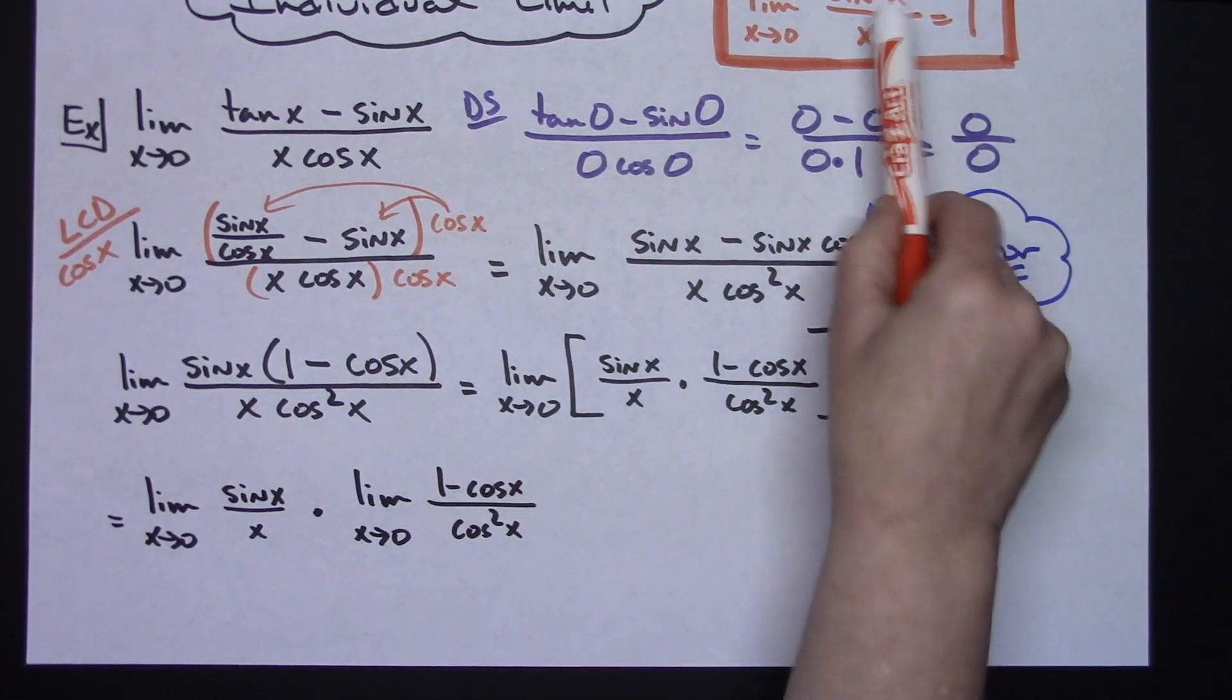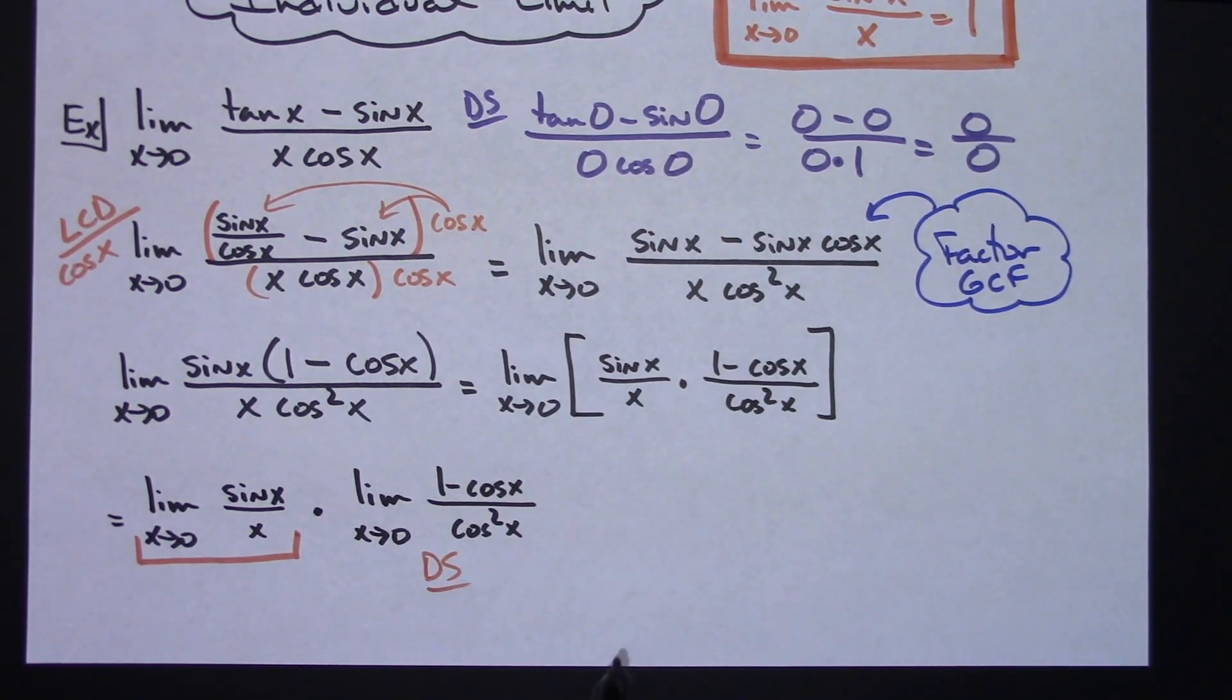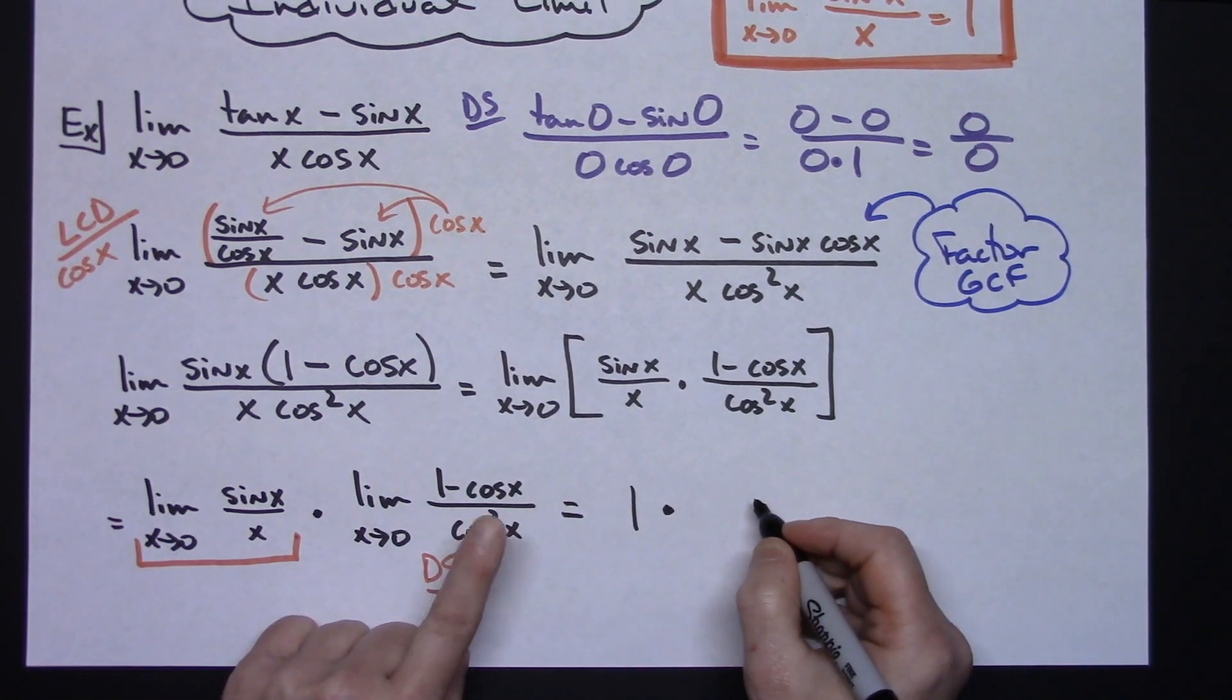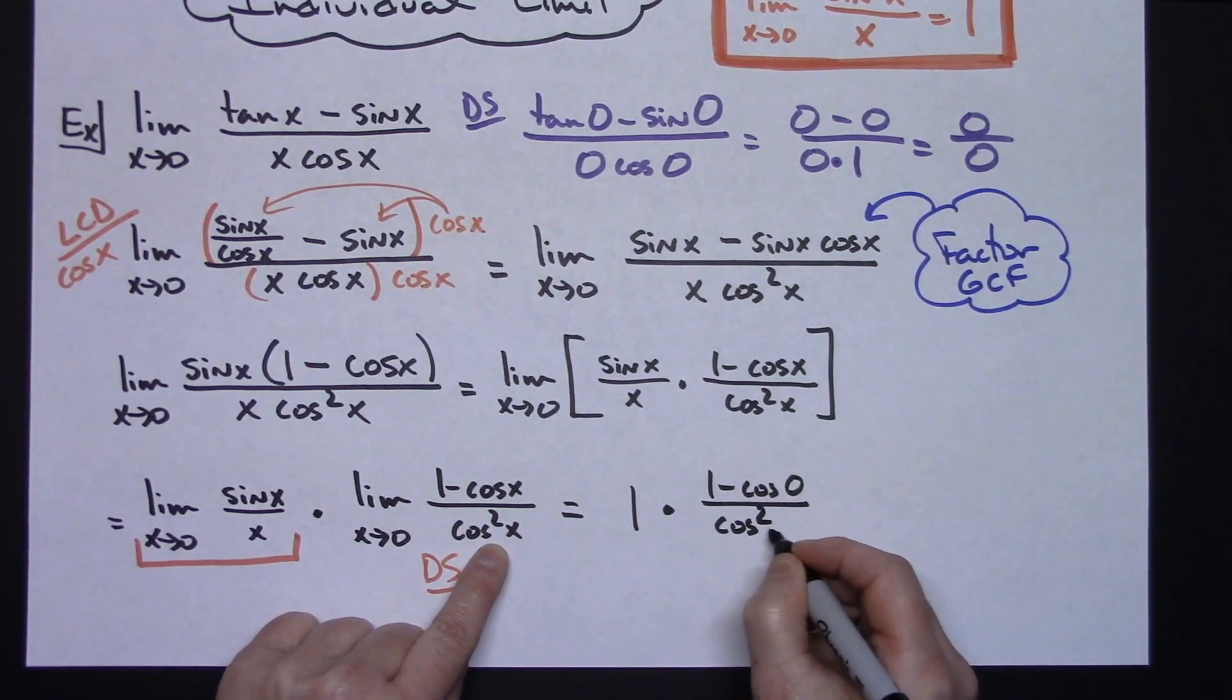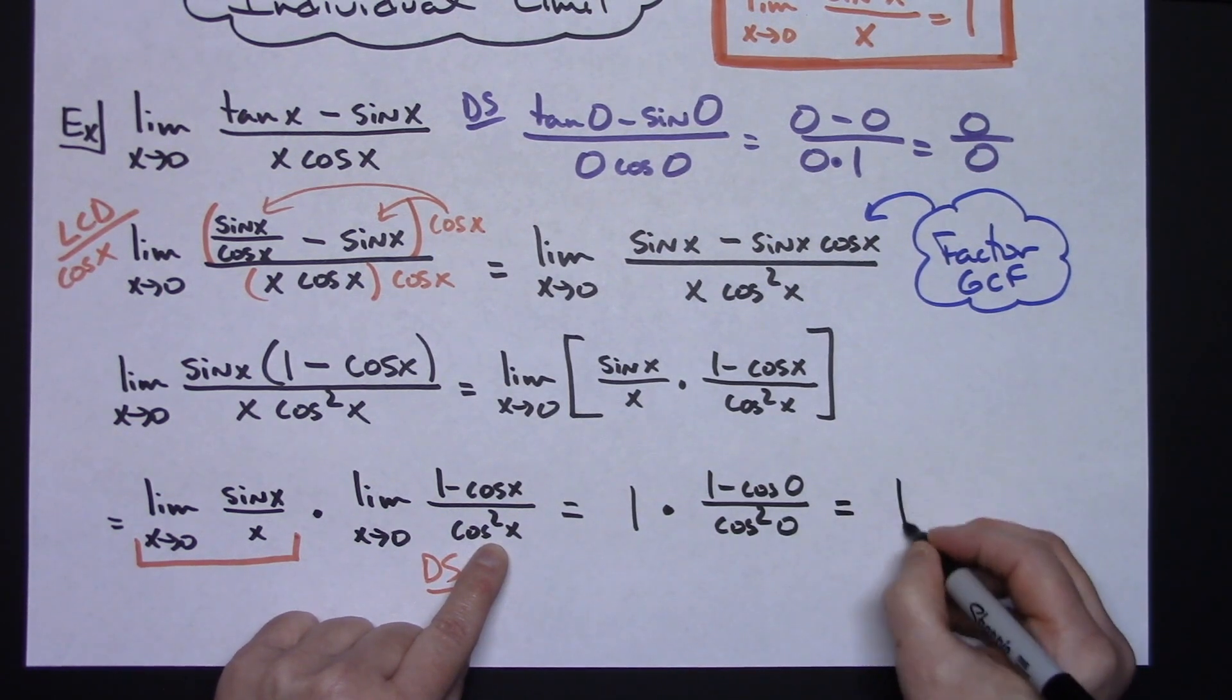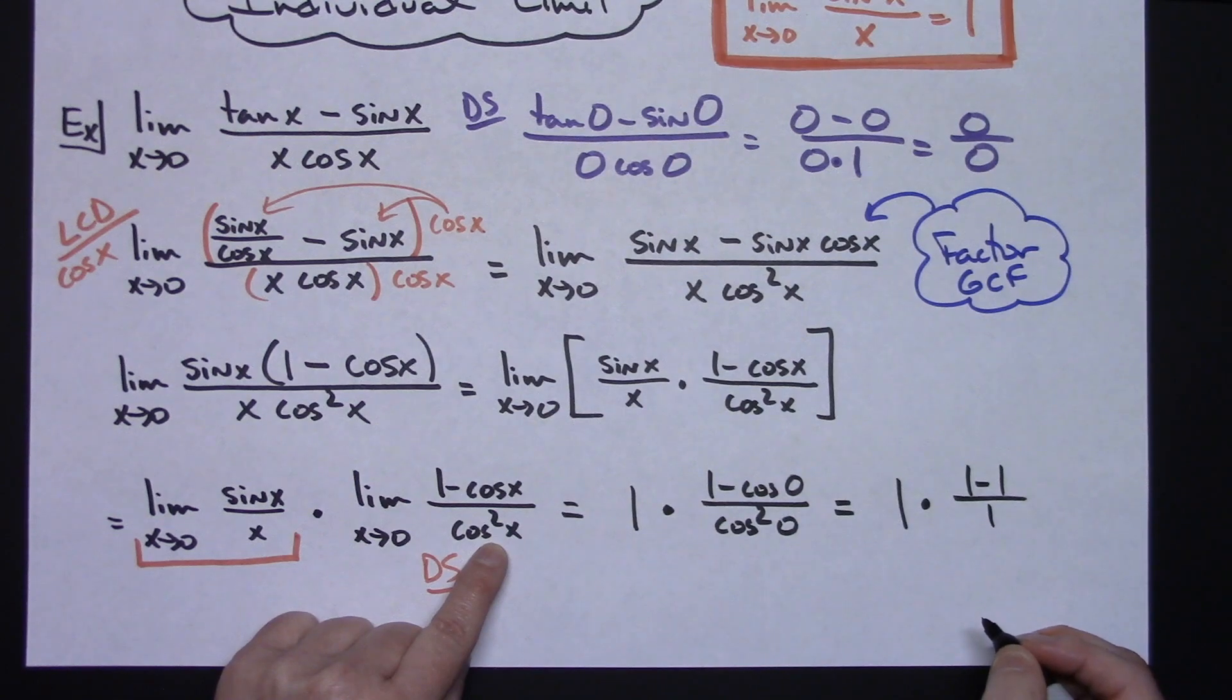Now because of this property, I know this one automatically goes to 1, and then I'm going to do direct substitution. So the limit is 1 times 1 minus cosine of 0 all over cosine squared of 0. Cosine of 0 is 1, so I have 1 times 1 minus 1 all over 1 squared, which gives me 1.